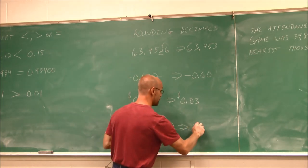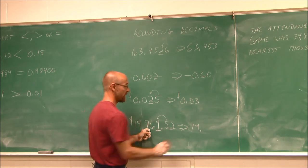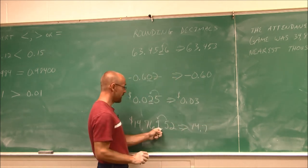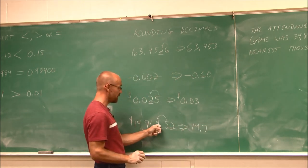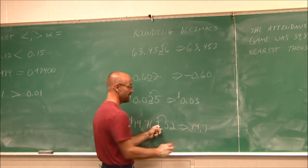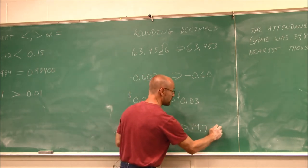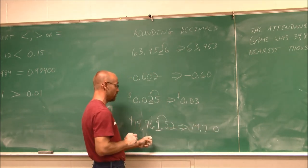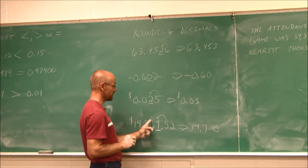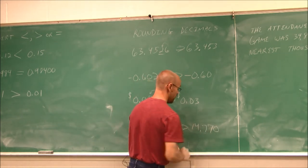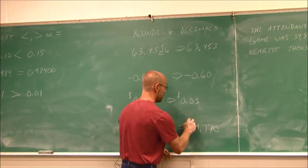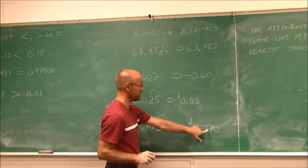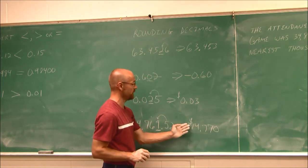So when I round this, I get $14,700 — the 9 becomes a 10, giving a 0 in the ones, and I carry a 1. 6 and 1 is 7. So this would be $14,770.